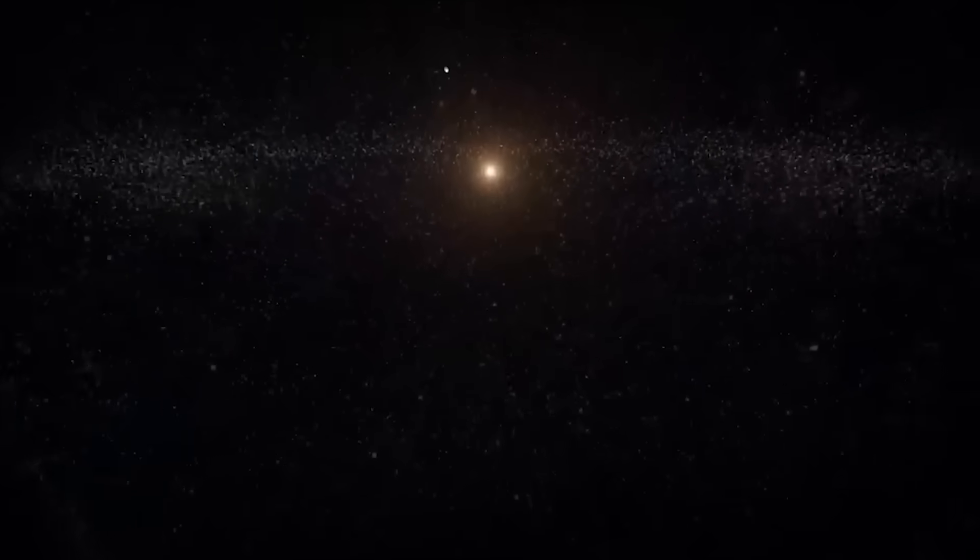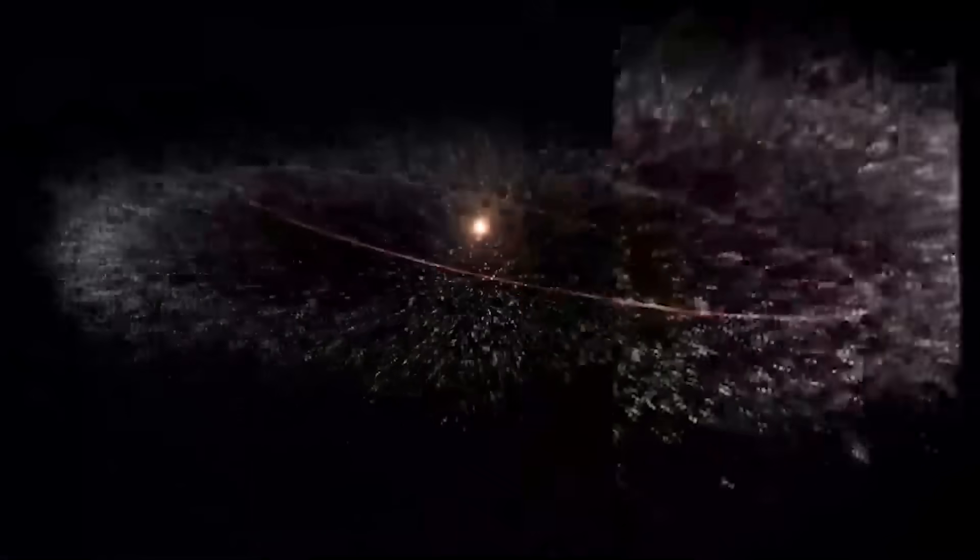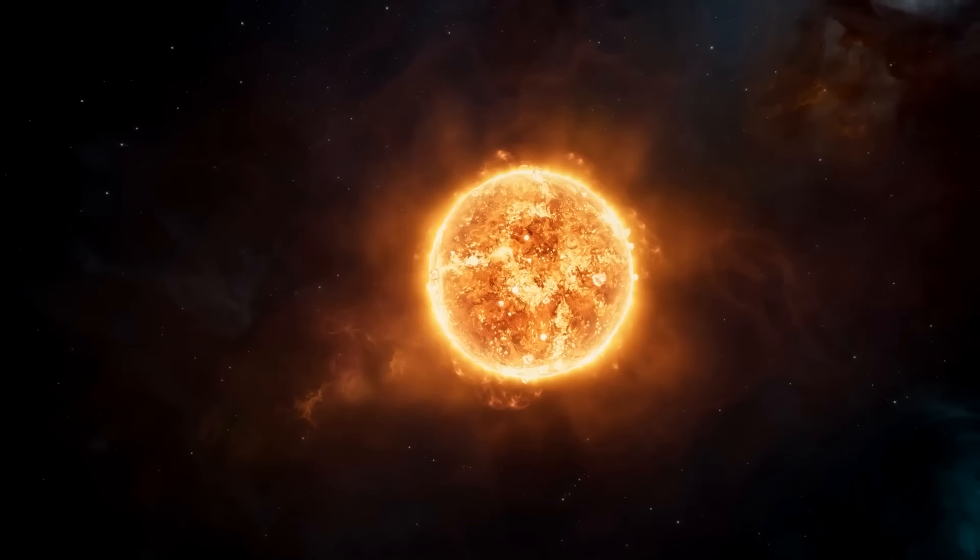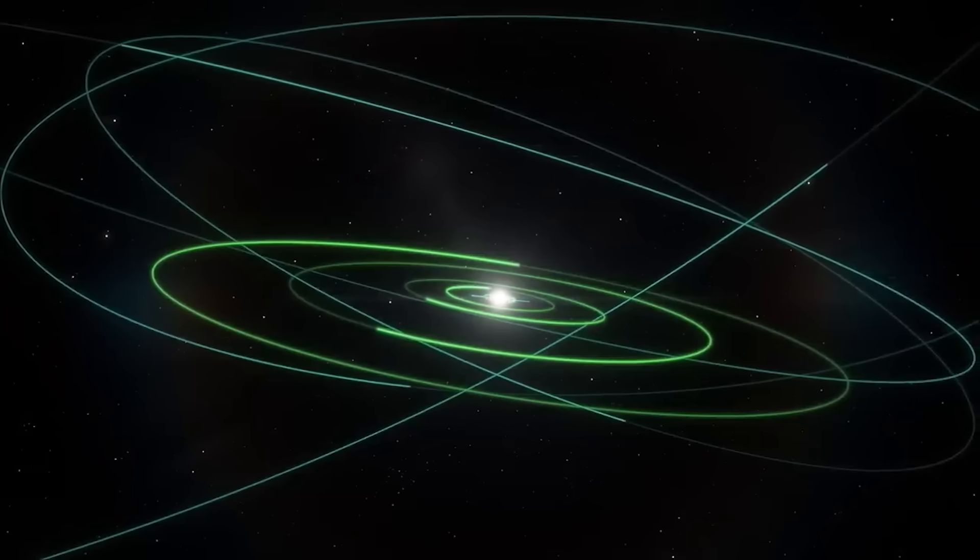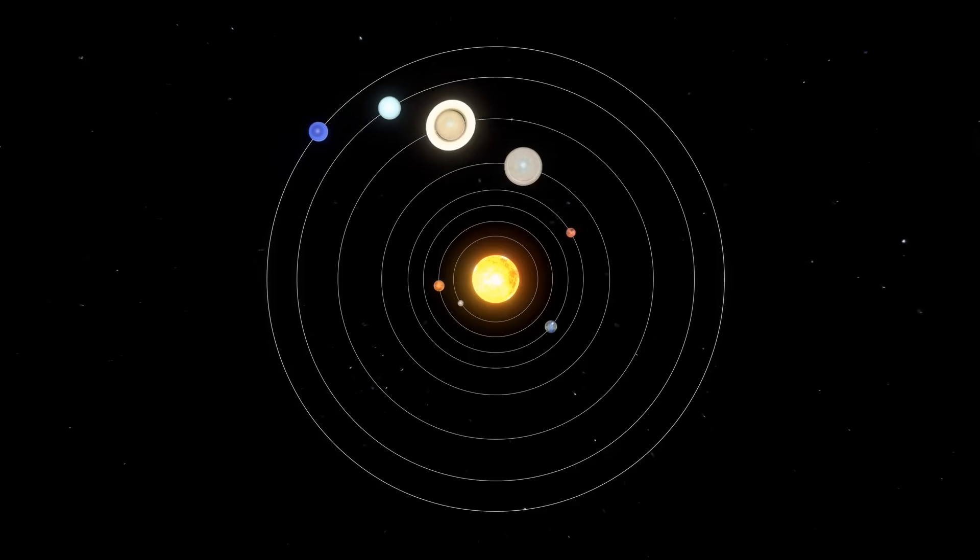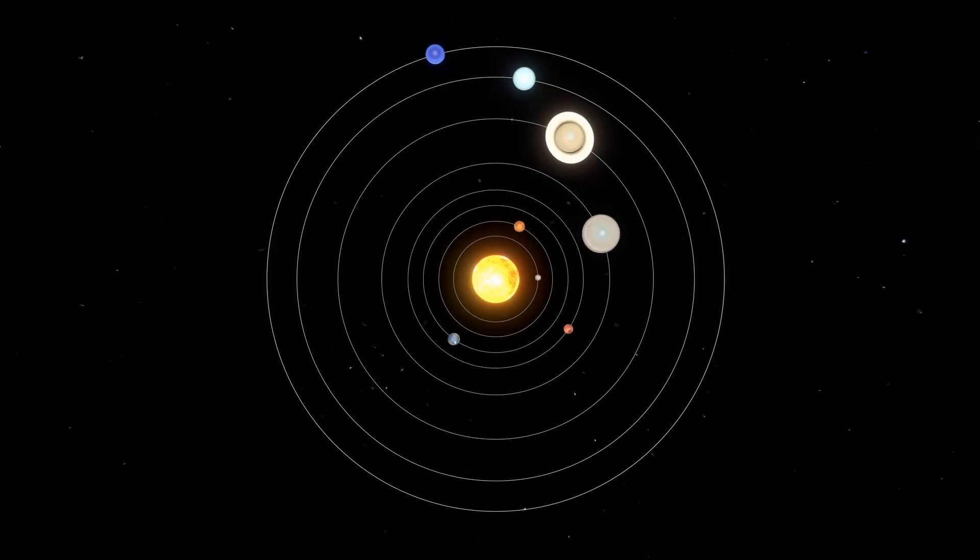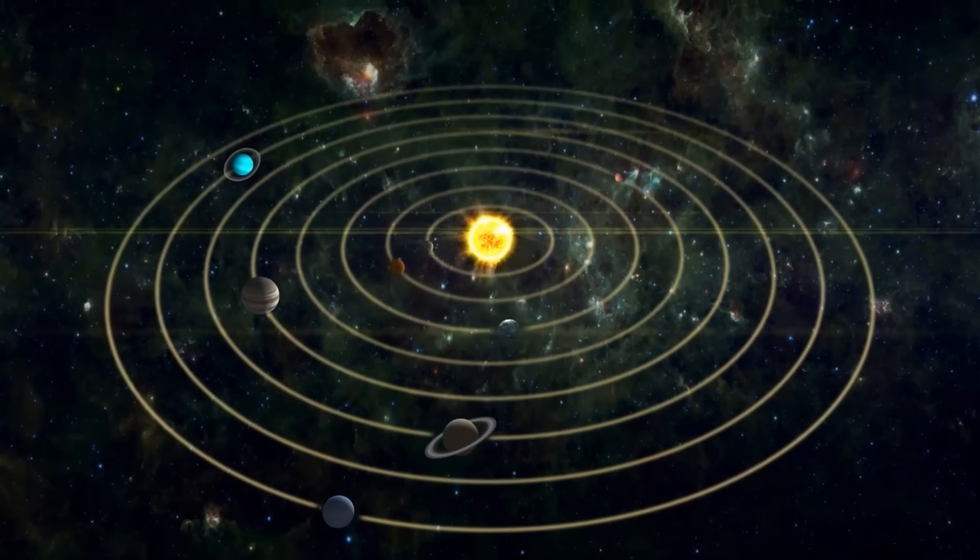This Oort cloud is a vast theoretical sphere of icy planetesimals surrounding our solar system, extending out over a light year from the sun. These objects are frozen time capsules, holding pristine material from the solar system's birth some four and a half billion years ago.